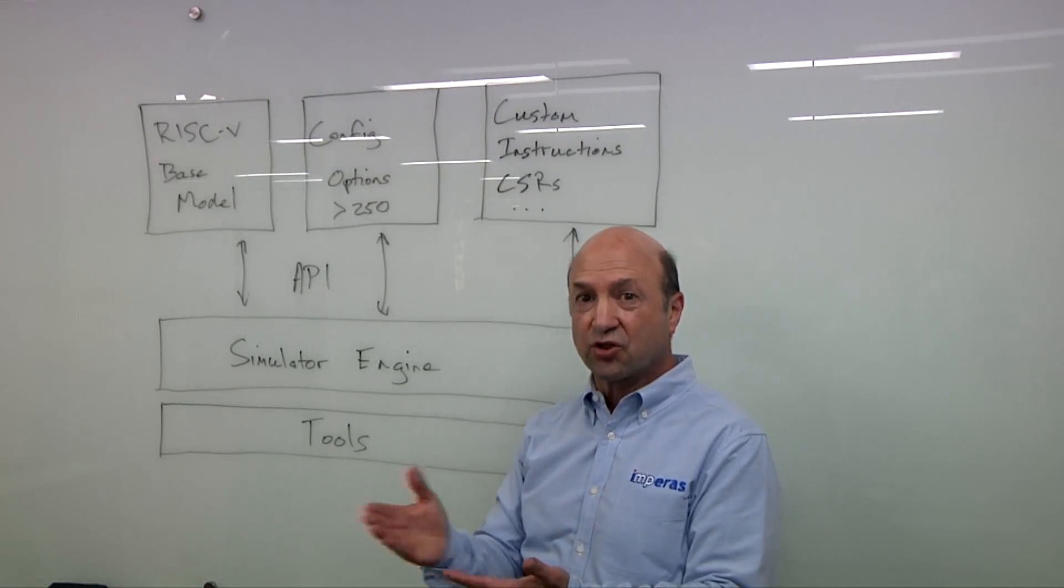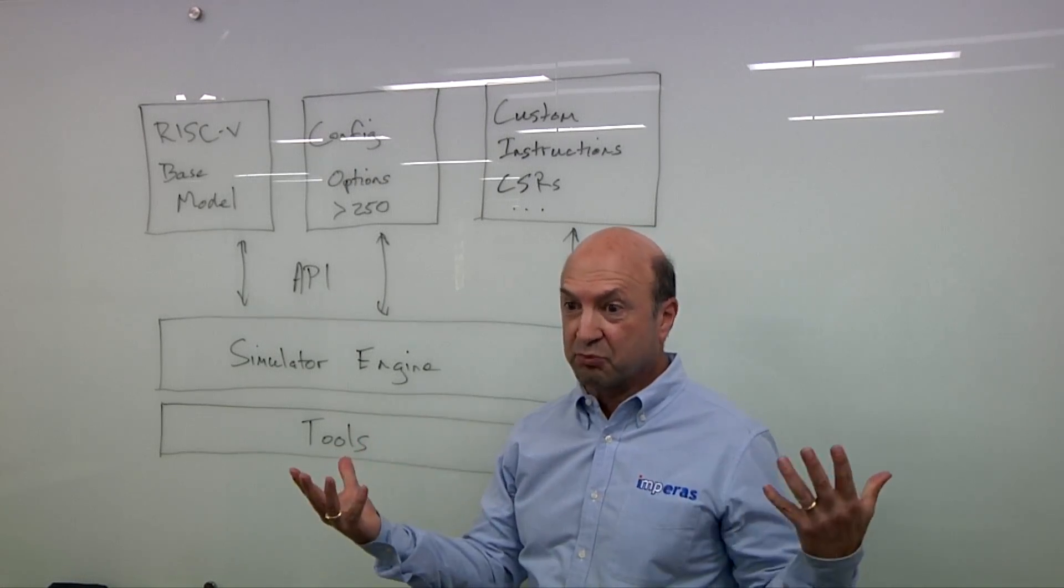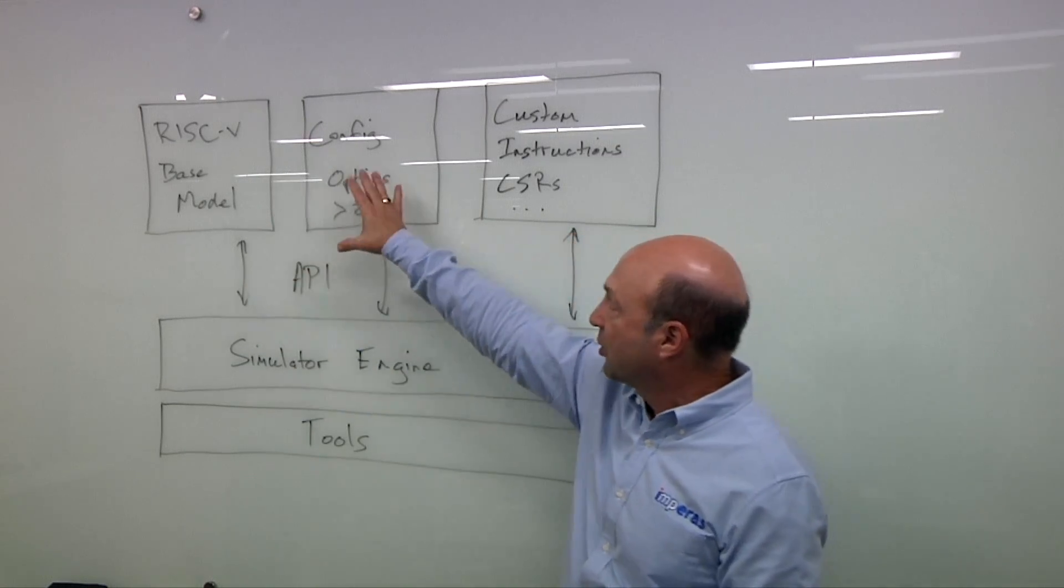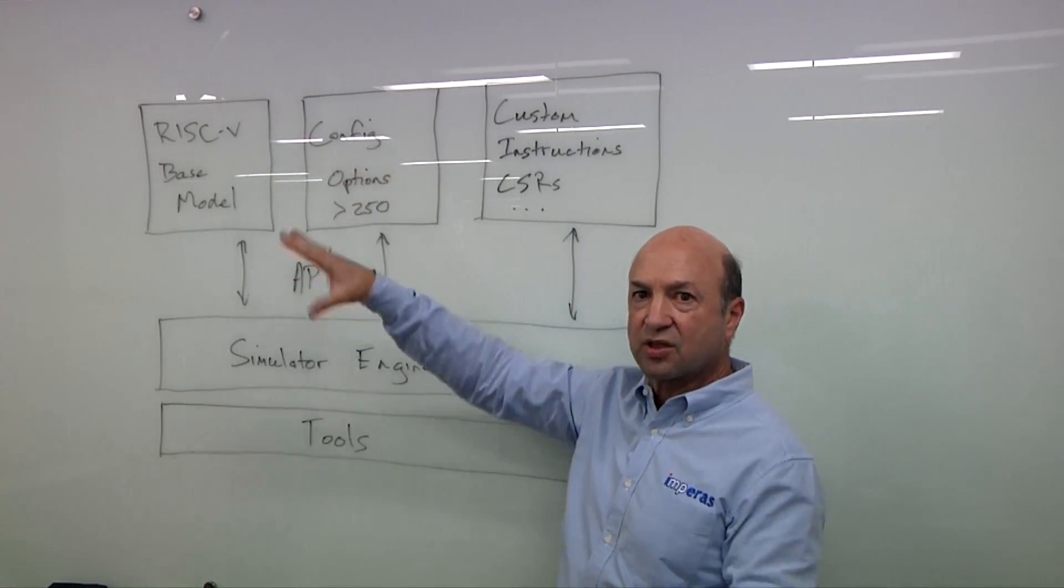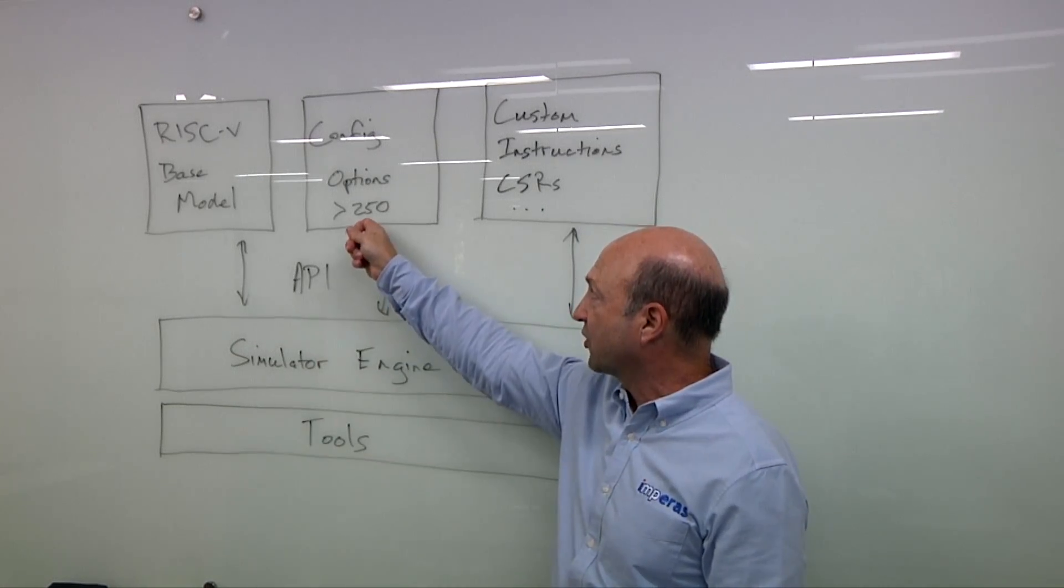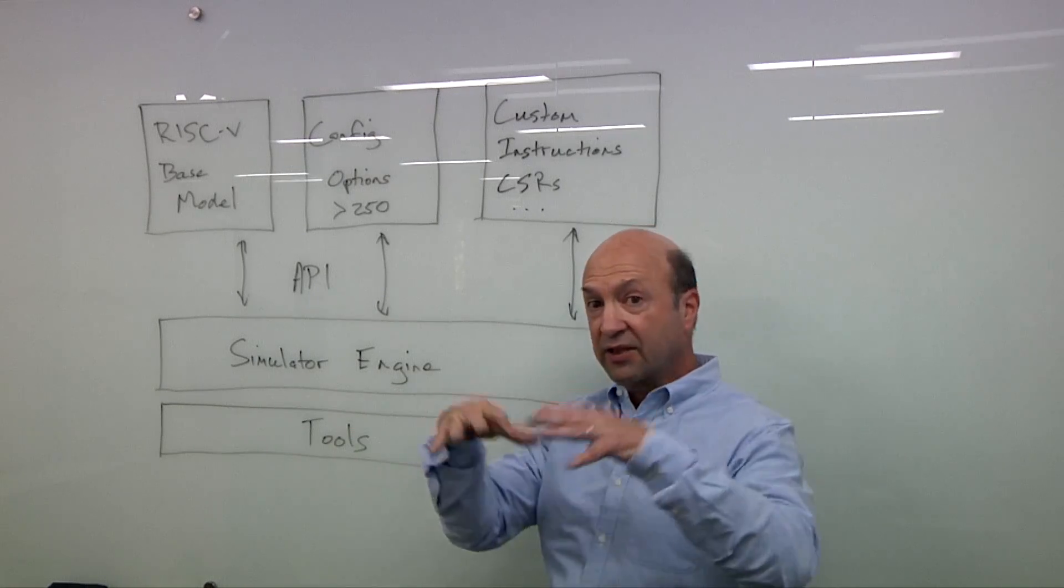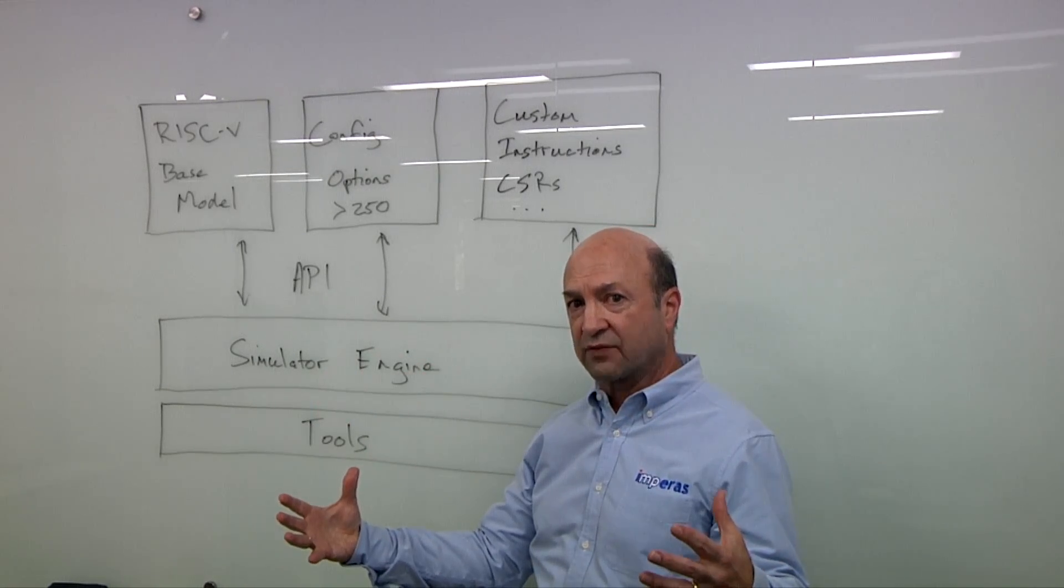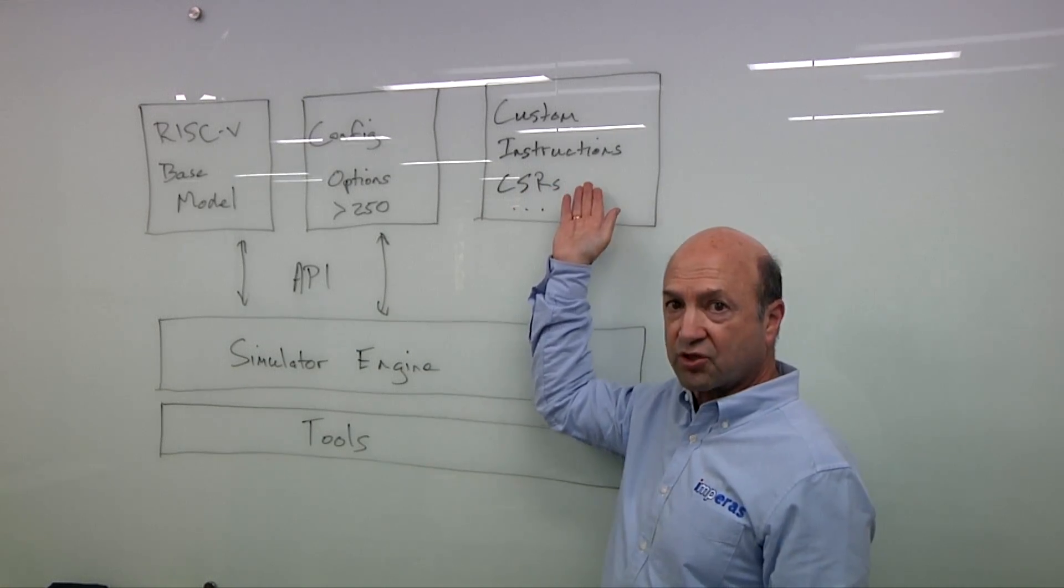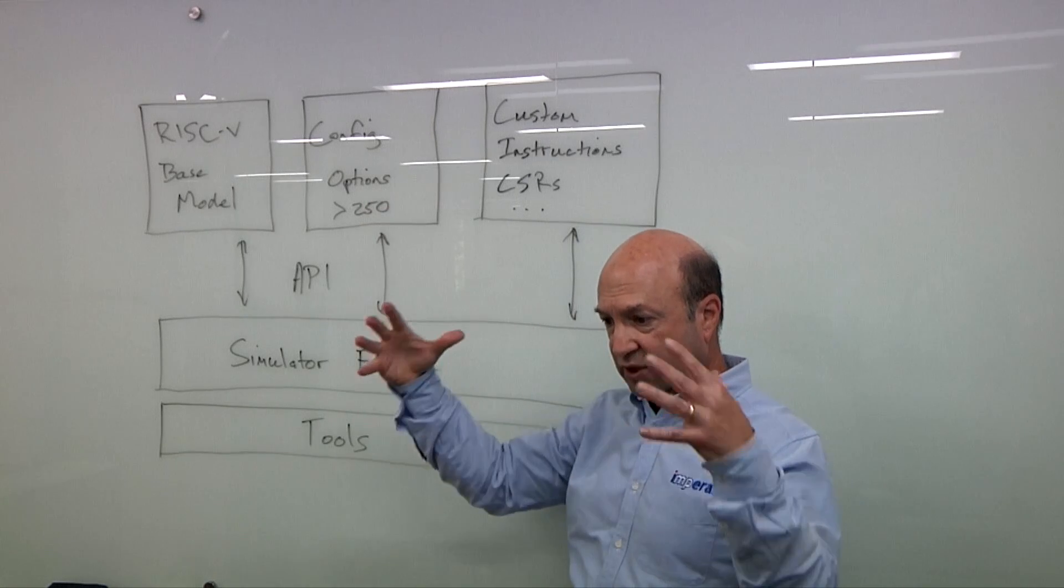Not only that, we support different versions of each extension, because people start building processors with different versions. So we start with a base model, but then within the spec, there's the ability to configure. There's a lot of user choices. And actually, we have over 250 configuration parameters that users can use. And this is all just within the RISC-V specification. The last block here is for custom instructions and CSRs. Because in addition to being able to configure within the spec, you can add those custom instructions and CSRs and other features outside of the RISC-V specification.